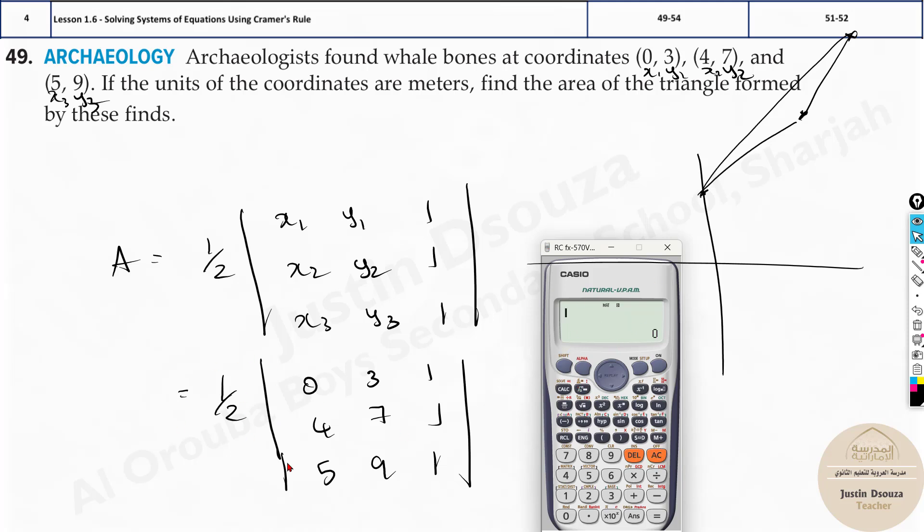Now I will just type it out. 0.5 - now the thing is, whenever you are in matrix mode, your fraction symbol doesn't work. This is 1 divided by 2, or you can just write 0.5, it's the same thing. Multiply it with what? The determinant, shift 4. What is determinant? Option 7. Of what? Of matrix A. That is again shift 4 and option 3.